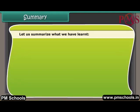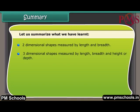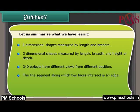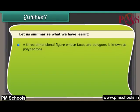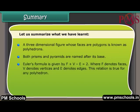Summary: two-dimensional shapes are measured by length and breadth; three-dimensional shapes are measured by length, breadth, and height or depth. 3D objects have different views from different positions. An edge is the line segment along which two faces intersect, and vertices are the points where three or more faces meet. A three-dimensional figure whose faces are polygons is a polyhedron. Both prisms and pyramids are named after their bases. Euler's formula is F + V − E = 2, where F denotes faces, V denotes vertices, and E denotes edges — this relation is true for any polyhedron.